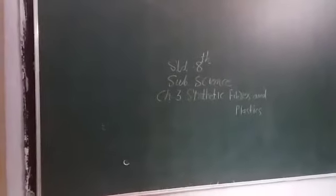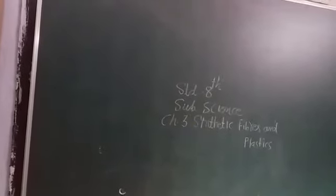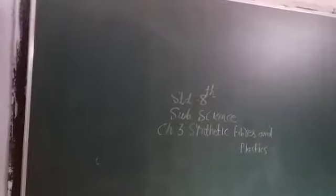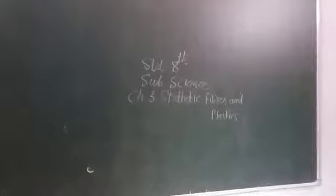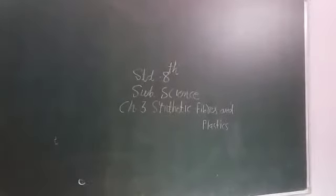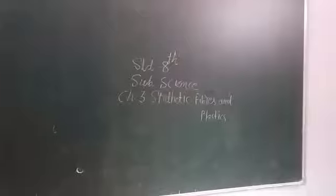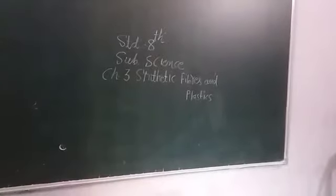Next number 9, which of the following are thermosetting plastic? A polythene, B bakelite, number 3 PVC and melamine. Next number 10, by which name is the mixture of polyester and cotton known? The option is A terrycott, B polycot, C polywool, D terrysilk. The answer I got is B polycot.